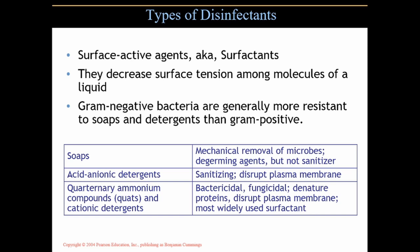Acid anionic detergents actually sanitize — they kill because they disrupt the plasma membrane. They are negatively charged and get attracted to different regions of the bacterial cell wall. These detergents are found mainly in shampoos, like sodium lauryl sulfate or ammonium lauryl sulfate, and work really well at breaking down sebum and getting rid of dirt and grime in your hair.